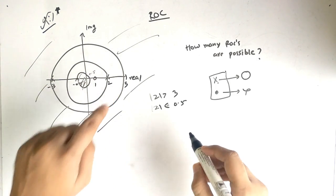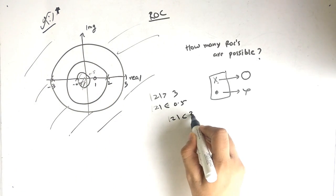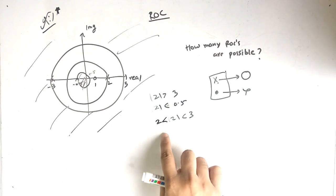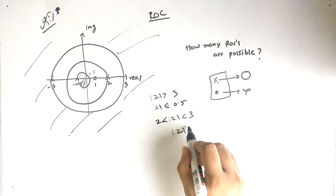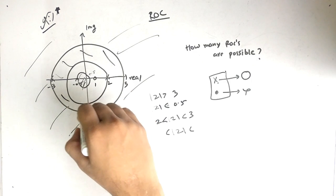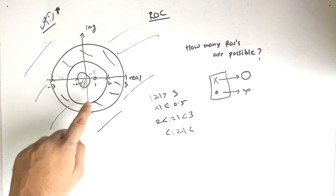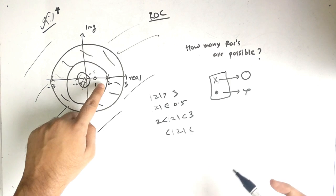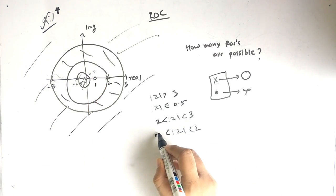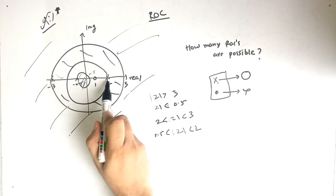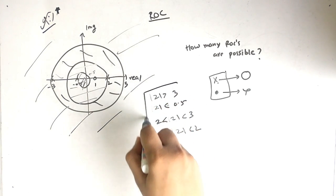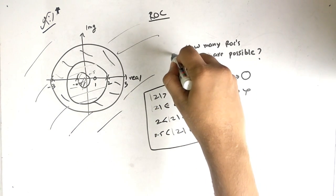Looking at the area between the circles: the third region of convergence is 2 < |z| < 3, meaning |z| is less than 3 but greater than 2. The fourth region is 0.5 < |z| < 2, where |z| is less than 2 but greater than 0.5 — the area between the 0.5 circle and the 2 circle. So these are the four regions of convergence and the first question is solved.